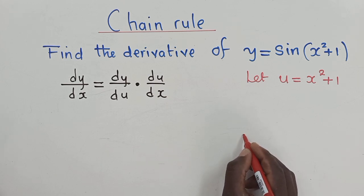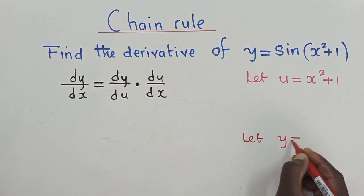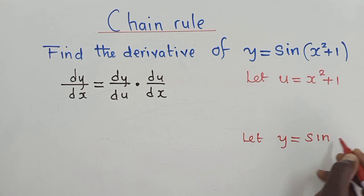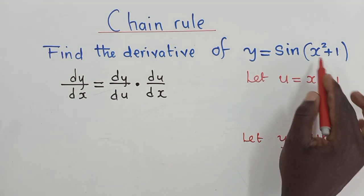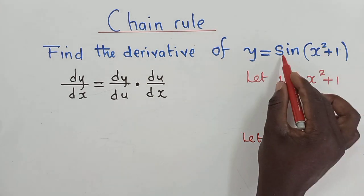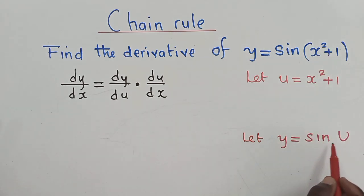And thereafter, we also let y be equal to sine u, because we're saying this thing is equal to u. So this sine right here will put a u. So it will look like this.